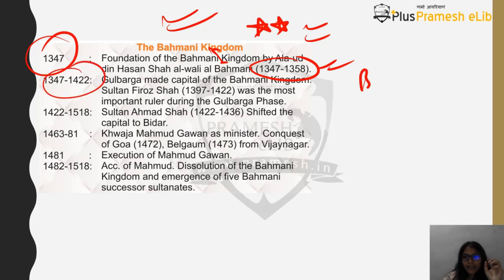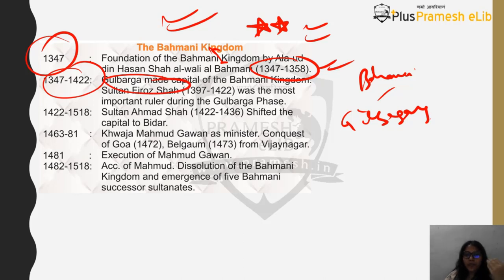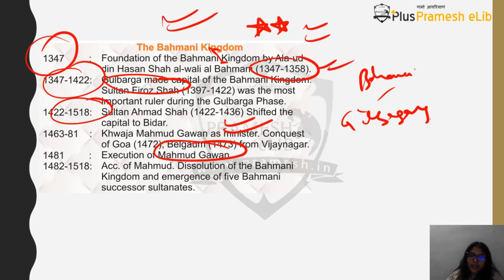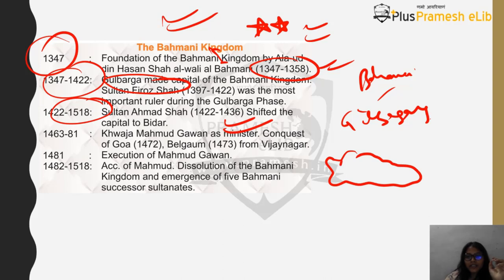The Bahmani Kingdom had its capital at Gulbarga. Sultan Feroz Shah was the second most important ruler. Then Sultan Ahmad Shah became the ruler and shifted the capital to Bidar. After him there were conquests of Goa and Belgaon from Vijayanagara. Finally, if you want to understand the Bahmani Kingdom, it can be called a conglomerate of five successor sultanates: Bidar, Berar, Khandesh, Golkonda, and Ahmadnagar.